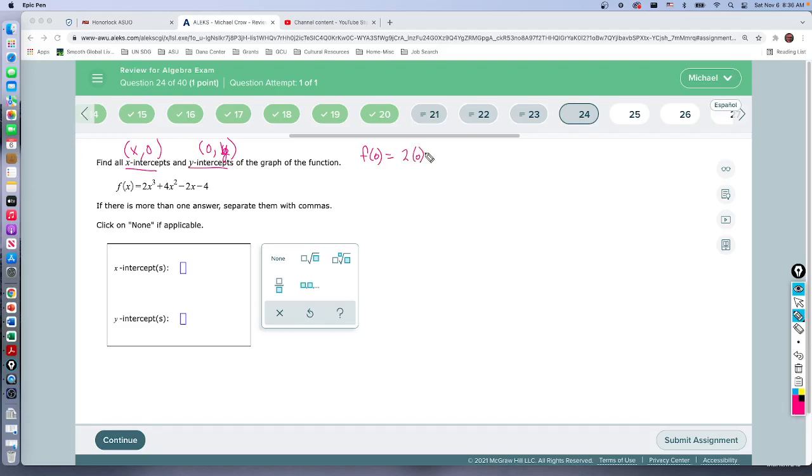2 times zero cubed plus four times zero squared minus two times zero. What happens anytime you multiply by zero? This all is going to be zero so what's our end answer? Negative four. So that's going to be our y-intercept.